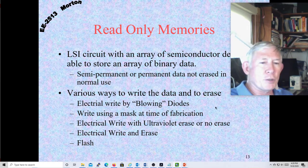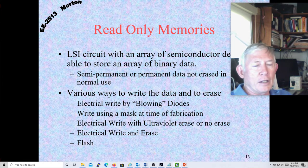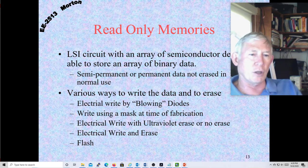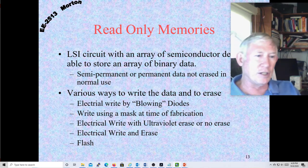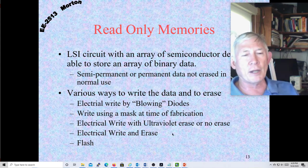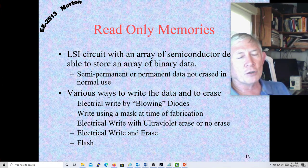ROMs are really nice because they allow you to store a pattern that you want to pull out at a later date. Then we came up with some ROMs that we could electrically write, but then we had to use ultraviolet light to erase them. They had a little window over the chip that you could shine the ultraviolet light through — and you could actually see your little chip mounted with its bonding wires.